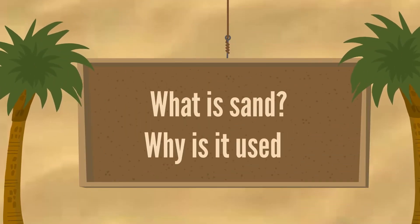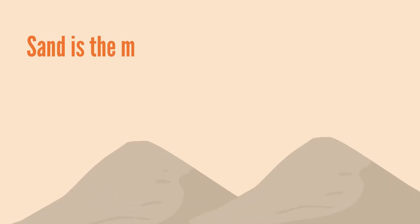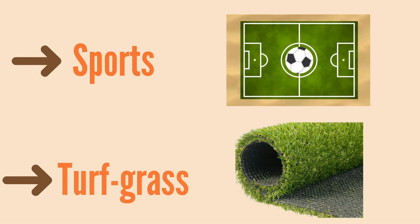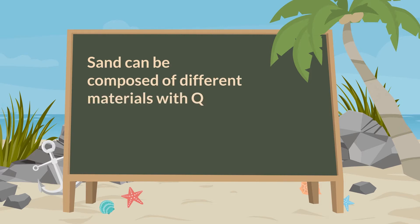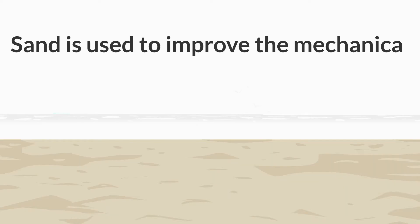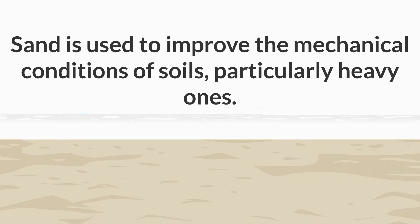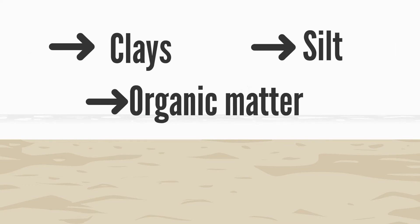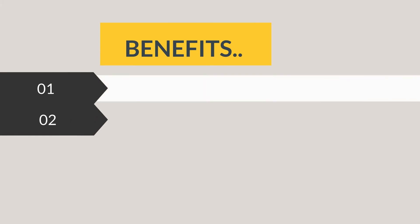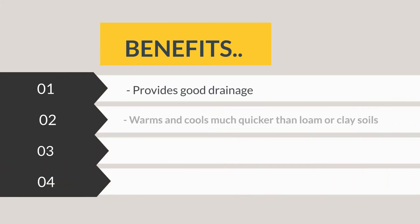So what is sand and why is it used? Sand is the main component of the majority of top dressing and construction materials used for sports turf and amenity grass turf surfaces. Sand can be composed of different materials, with quartz being the most well-known and most common. Sand is used to improve the mechanical conditions of soil, particularly heavy soils — having sand between clays, silts, and organic matter helps improve texture and immediate surface drainage, if the correct sand is used.